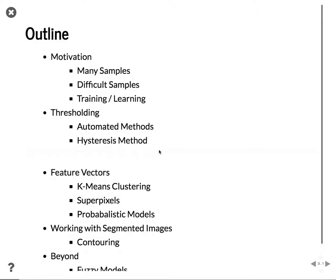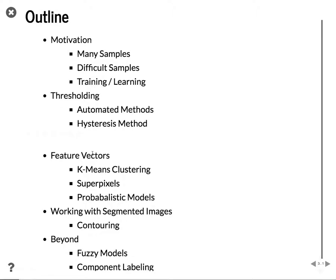In terms of the outline, we'll have the motivation — many samples, difficult samples — training and learning, what some automated thresholding methods are and how we can apply them. This idea of feature vectors, where we'll use more machine learning representations of images in table form rather than just a matrix, and how that feeds into superpixels and beyond. Then some ideas with contouring, and that problem of how you actually go about finding the boundary of a bone — we'll go into more detail on that.